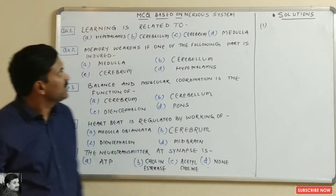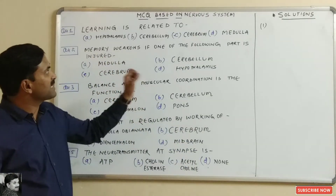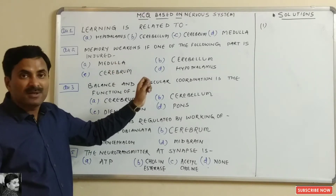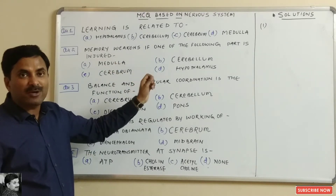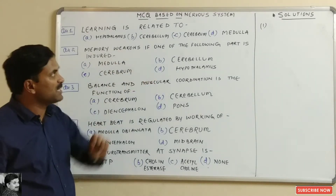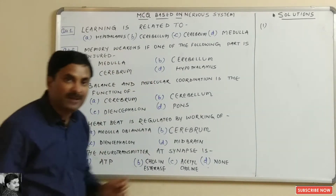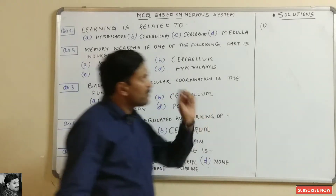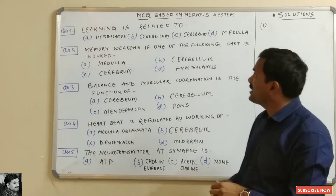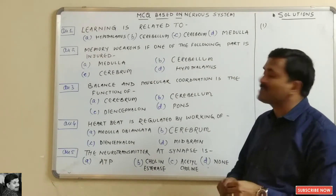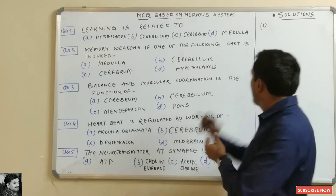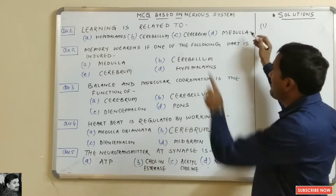Hello students, today we will be discussing MCQs based on a very important topic known as the nervous system. The very first question is: learning is related to which part of the brain?